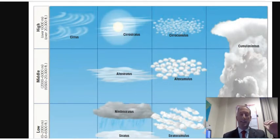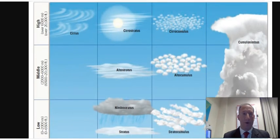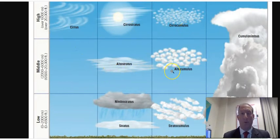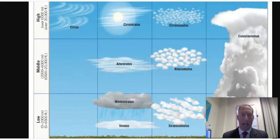Clouds are based on their form and their height — where are they in the sky and what do they look like? Here are 10 different types of clouds. There are three types of Cirrus clouds, two types of Alto clouds, and four types of lower clouds. So that's what we're going to be looking at: the 10 different types of clouds.